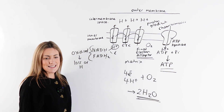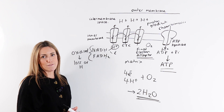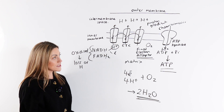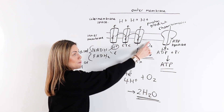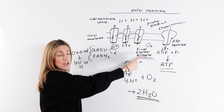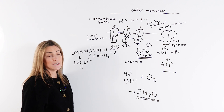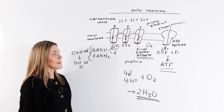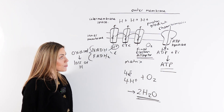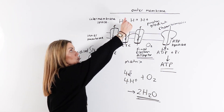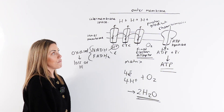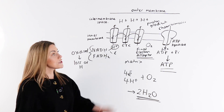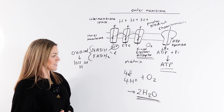Without oxygen, oxidative phosphorylation would stop, because without oxygen the electrons cannot be passed to a final electron acceptor, which means they cannot pass along the electron transport chain. The transfer of electrons will stop, which means the protons will not be pumped into the intermembrane space, and then ATP will not be produced because there is no proton gradient.